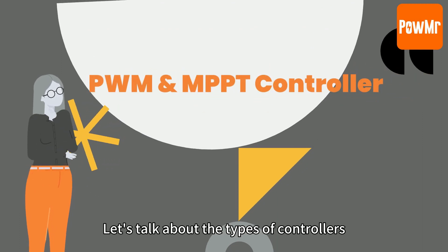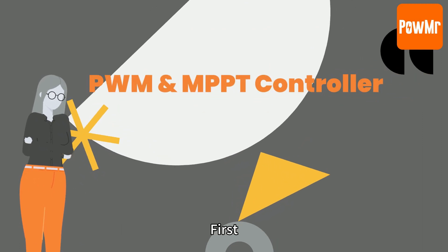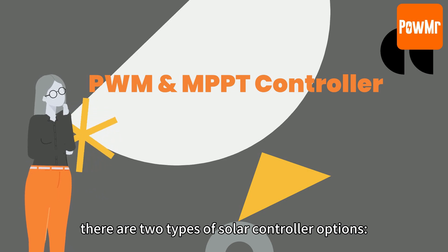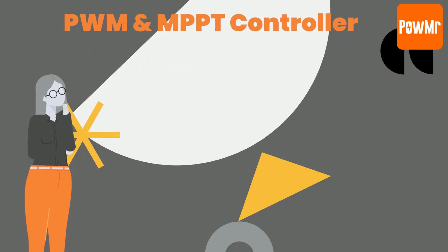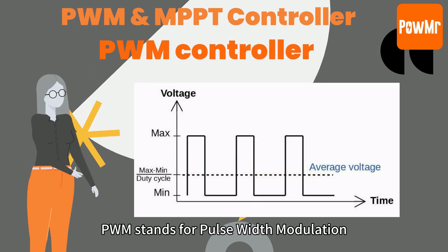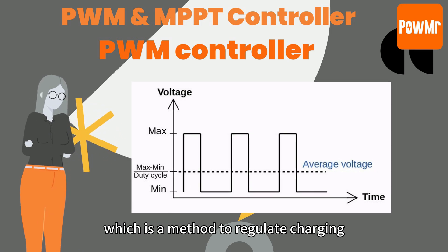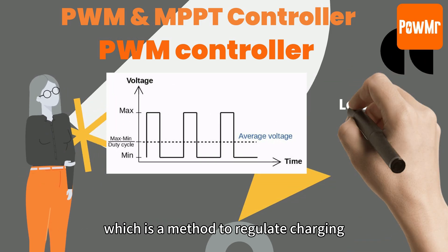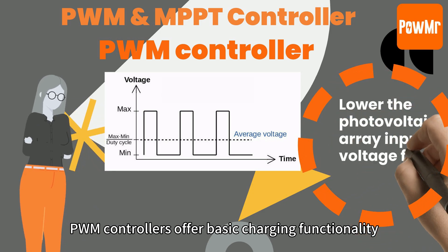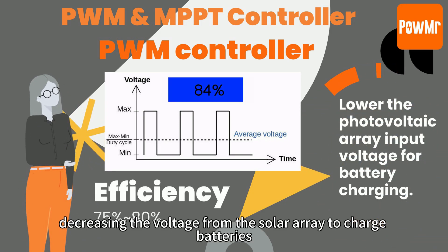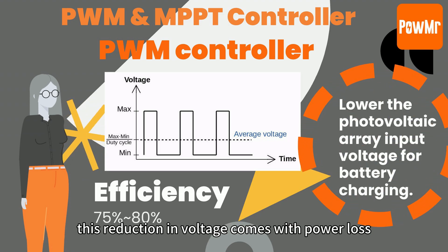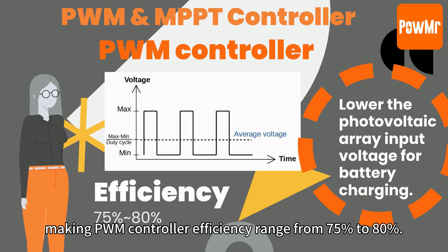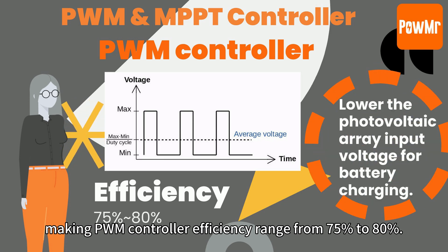Now let's talk about the types of solar controllers. There are two types of solar controller options: PWM controllers and MPPT controllers. PWM stands for Pulse Width Modulation, which is used to regulate charging. PWM controllers offer basic charging functionality, decreasing the voltage from the solar array to charge the batteries. However, this reduction in voltage comes with power loss.